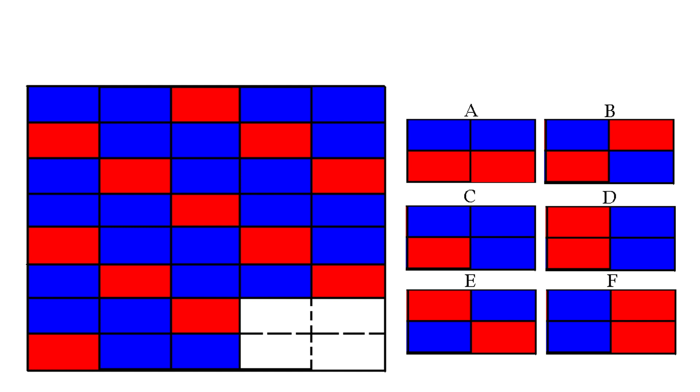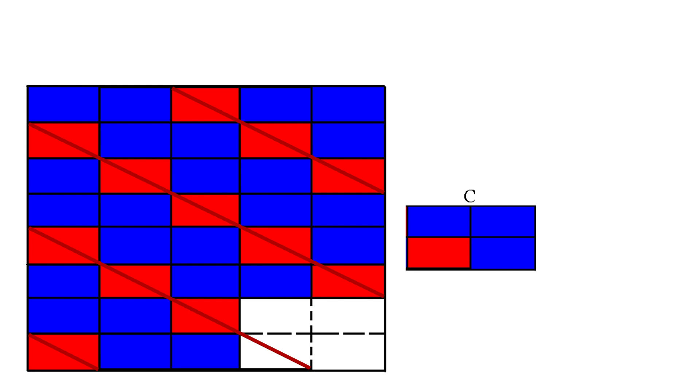This puzzle on the screen is an example puzzle, so you know how the puzzles work. If we look at these diagonals, every tile there is red, while every other tile is blue, giving answer C as the correct answer.